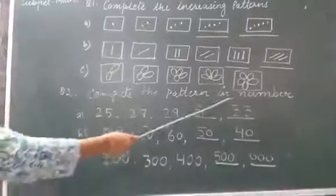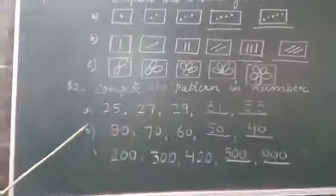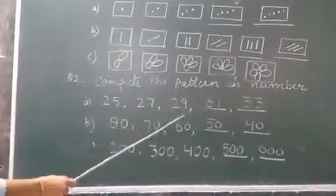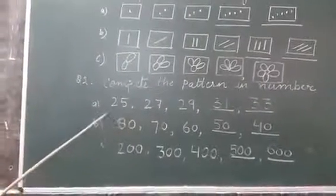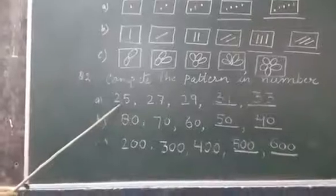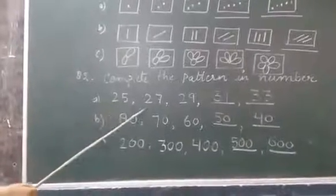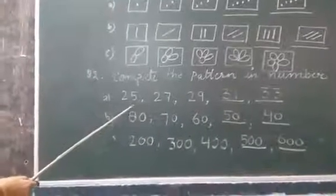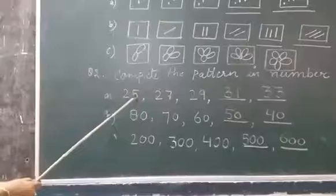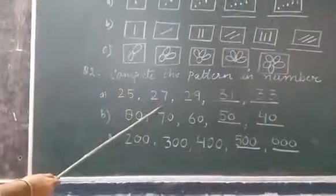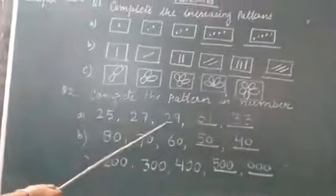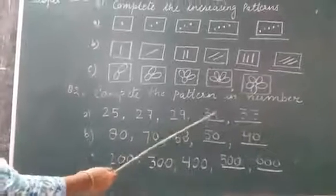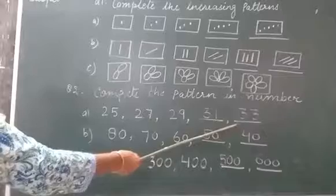Solve next question. Complete the pattern in numbers. How to fill the numbers with the help of this pattern? First, see the sequence of this pattern. 25, 27, 29. See thus, observe the pattern. Plus 2. Good. 25 plus 2, 27. 27 plus 2, 29. Again plus 2, 31. Again plus 2, 33.